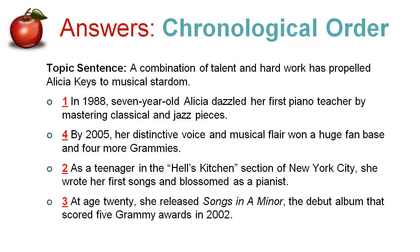Here are the answers. Number one is the earliest date — in 1988, at seven years old, you have two time clues there, so that's going to be the first sentence. Number two is 'as a teenager,' so we've moved from seven years old to teenager — that's time order. The third one mentions 'at age 20,' so you've gone from seven to teenager to age 20. And statement number four is 2005, the latest year, so that is the last sentence. We've moved from seven years old in 1988 all the way to 2005, where she is 23. Make sure that you tell your narration in a clear chronological sequence from beginning to end.